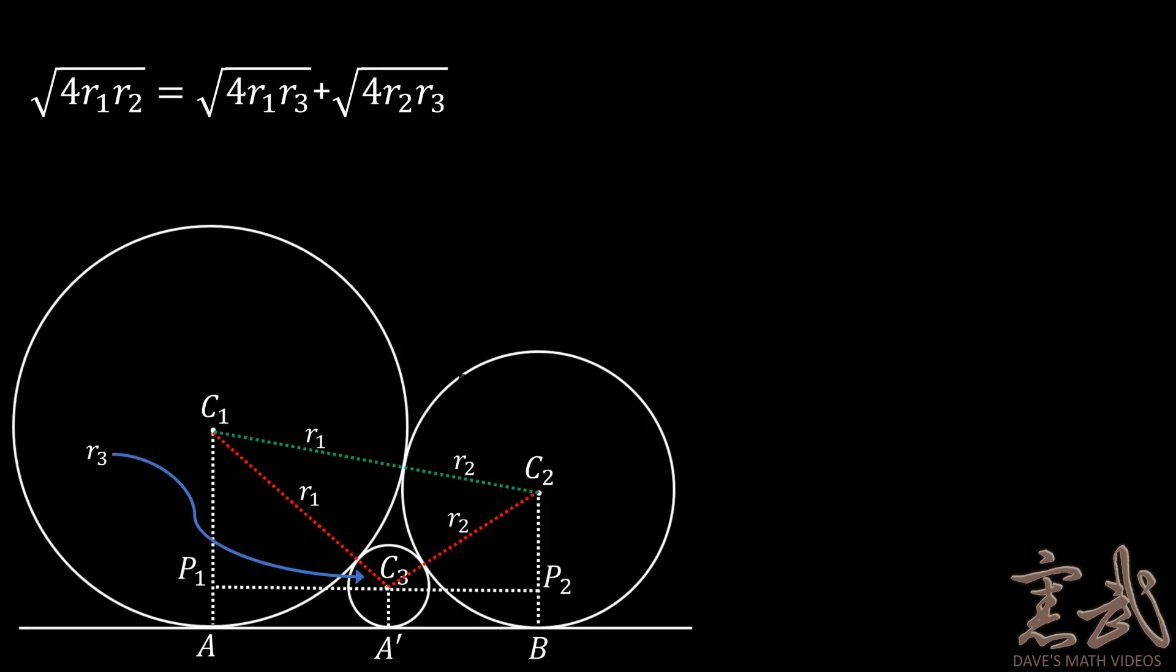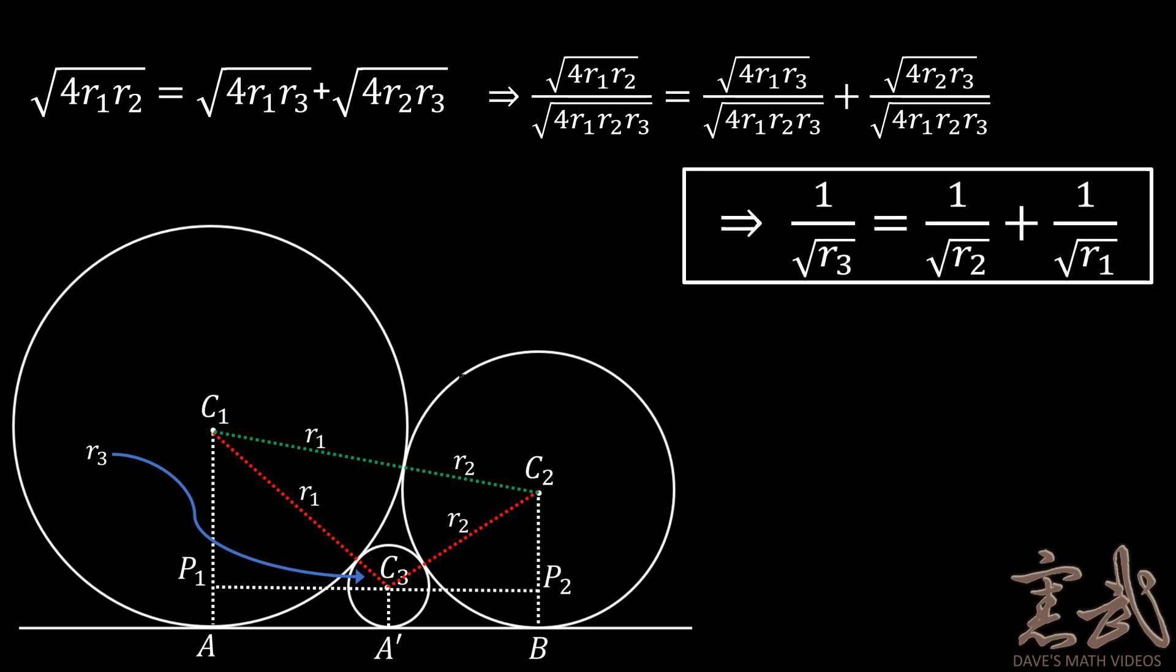Now, we can clean this up a little bit by dividing through by the square root of 4 times R1 R2 R3. If we do this, we get a very elegant relationship. We find that the 1 over the square root of R3 is equal to 1 over the square root of R2 plus 1 over the square root of R1.